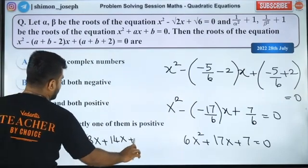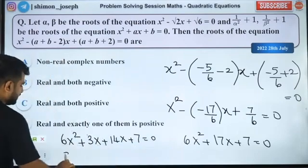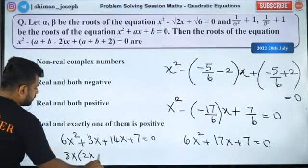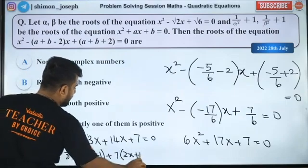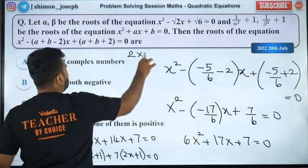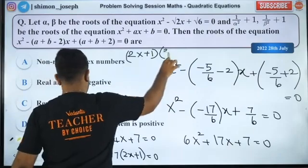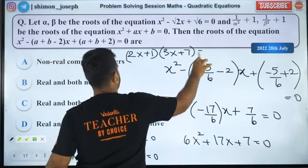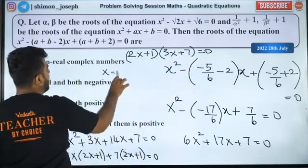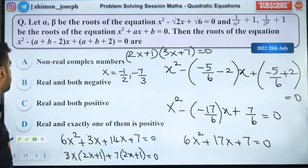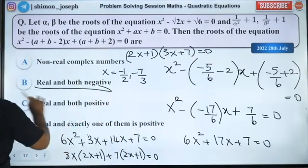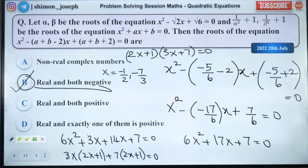Split the middle term and solve. So if you solve it, what do you get? If you solve it, you will get 2x plus 1. So 2x plus 1 into 3x plus 7 is equal to 0. So x is equal to minus half, minus 7 by 3. These are the two roots. So real and both negative. That's the right answer. Real and both negative. Did you all like it? Massa.